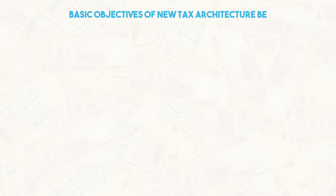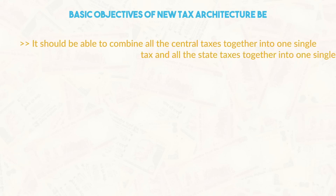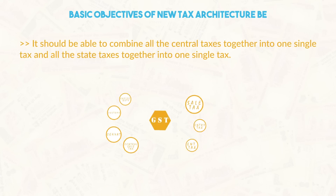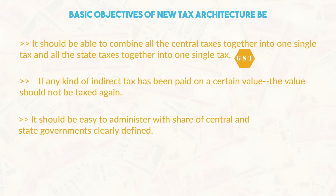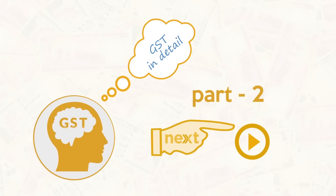The key to increasing tax revenues is to incentivize people to comply with the tax laws, and simplifying the indirect taxation system holds the key. The basic objectives of the new tax architecture should be: first, to combine all central taxes and all state level taxes into one single tax; second, if any indirect tax has been paid on a certain value — whether to the centre or to the state — that value should not be taxed again, meaning central and state level taxes should be offset against each other; and third, it should be easy to administer with the share of central and state governments clearly defined. We will see how the GST system tries to address these in the next video.